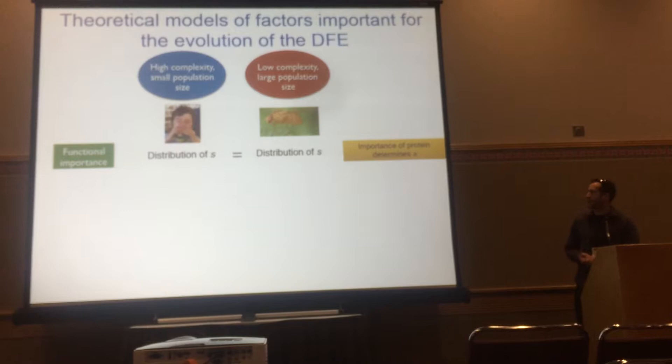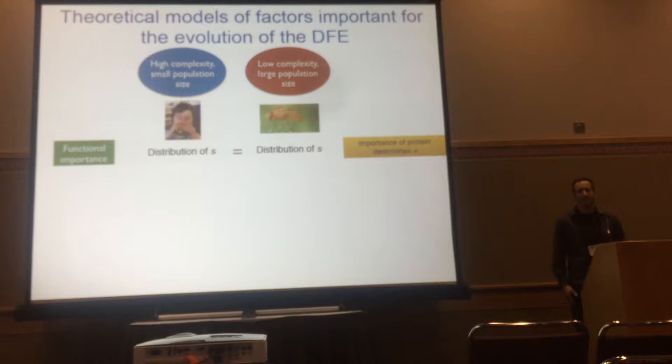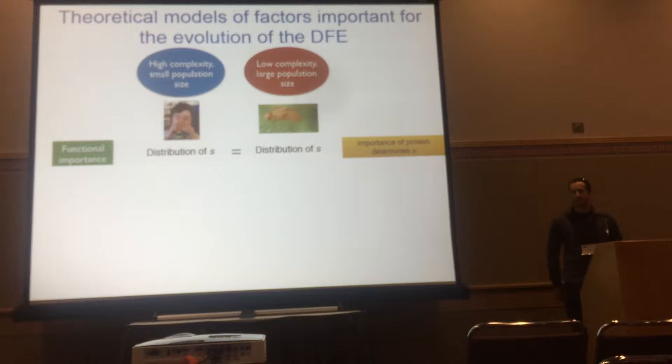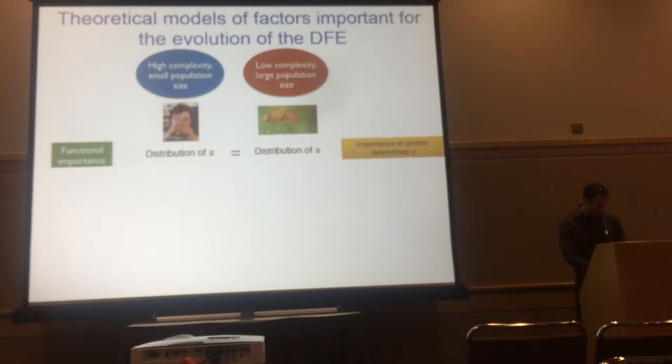The first and probably most naive model is what I'm calling the functional importance model. The idea is that a mutation's effect on fitness depends on whether the particular protein it occurs in is related to fitness. Assuming things are generally constant over time, this would predict that the distribution of fitness effects should be similar across species.